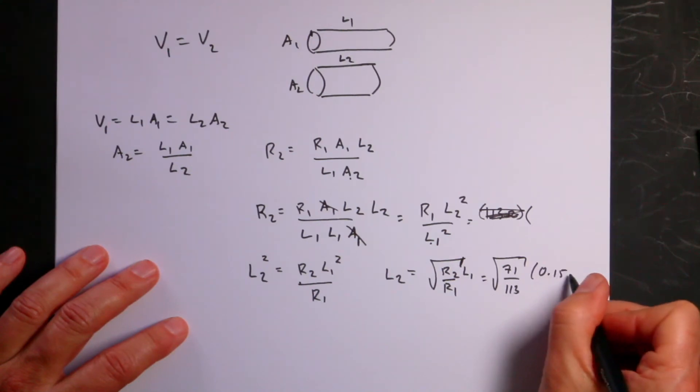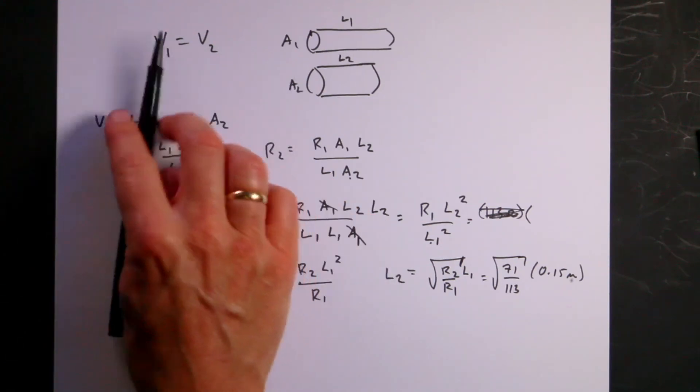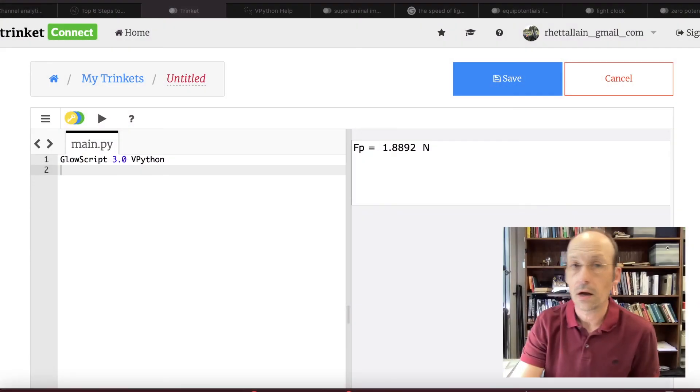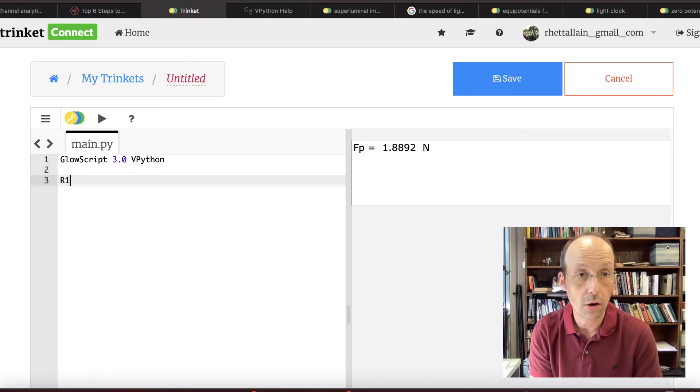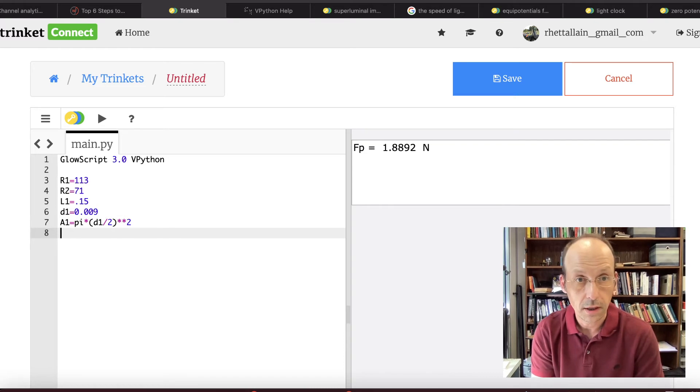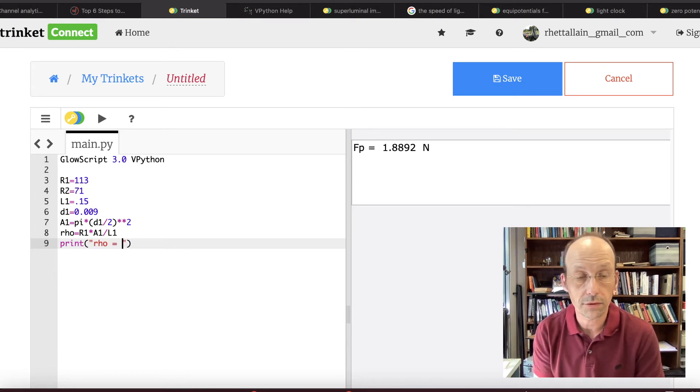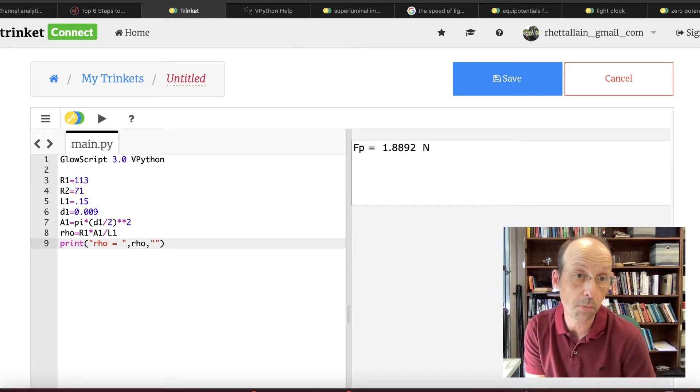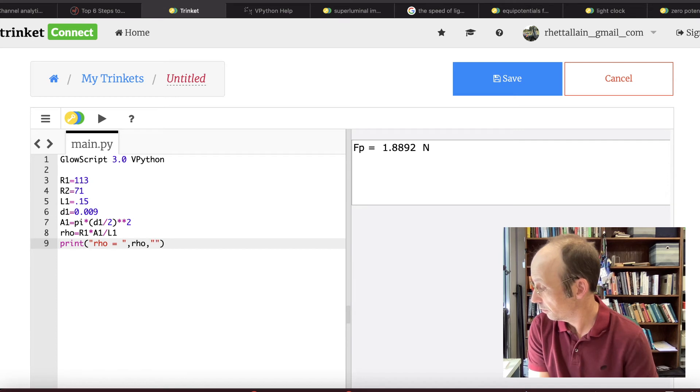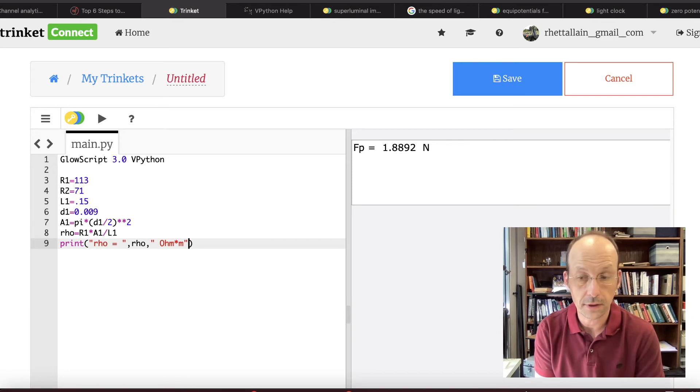Let's jump over to Python and check everything out with my numbers. So here we are. Let's go ahead and put in every value that we know. So R1 equals 113, R2 equals 71, L1 equals 0.15, D1 equals 0.009, A1 equals pi times D1 divided by 2 squared. Let's just go ahead and calculate the resistivity just for fun. I put it in here as R1 times A1 divided by L1. And let's print that. Rho equals rho. And it has units of ohm meters.